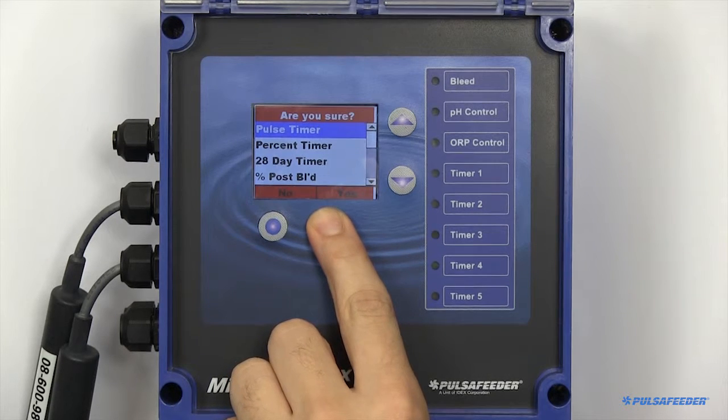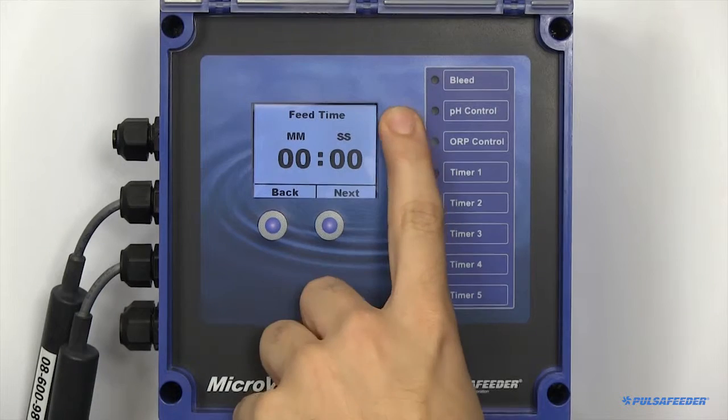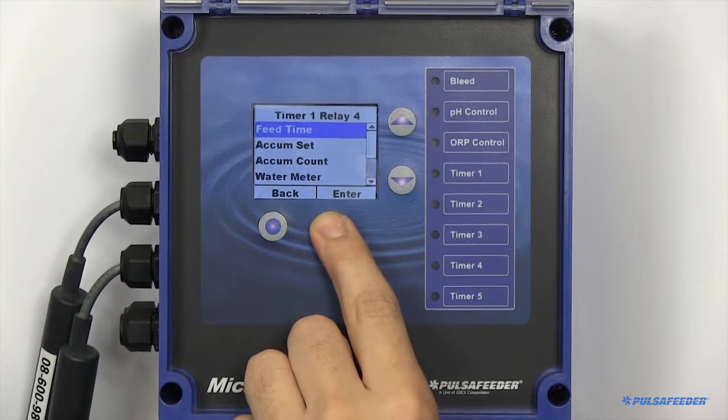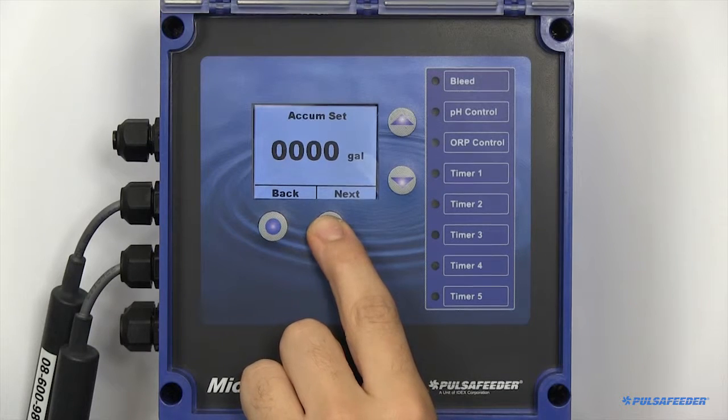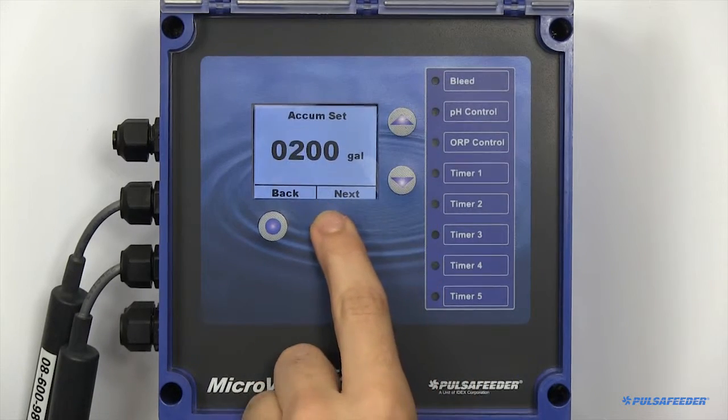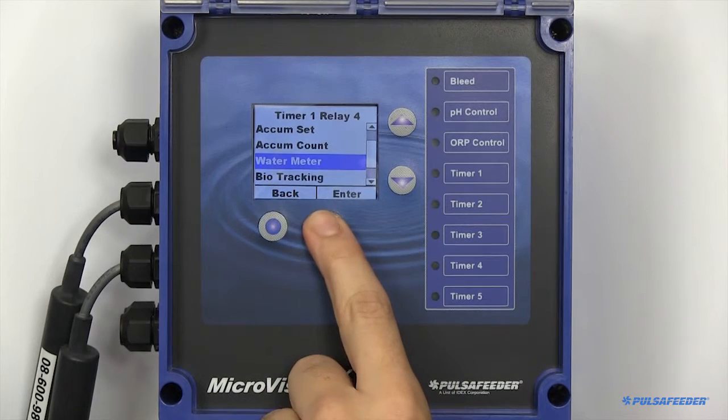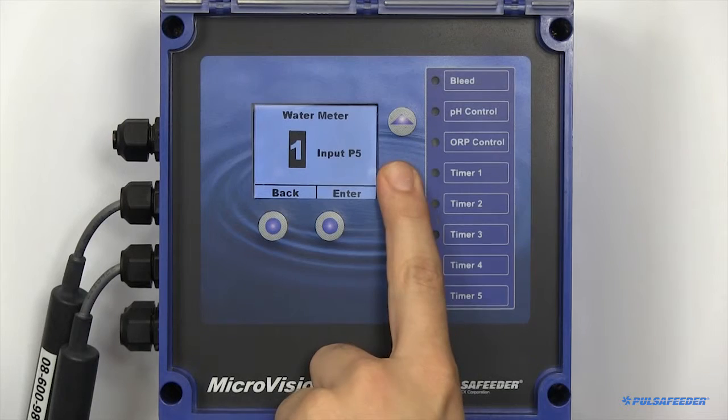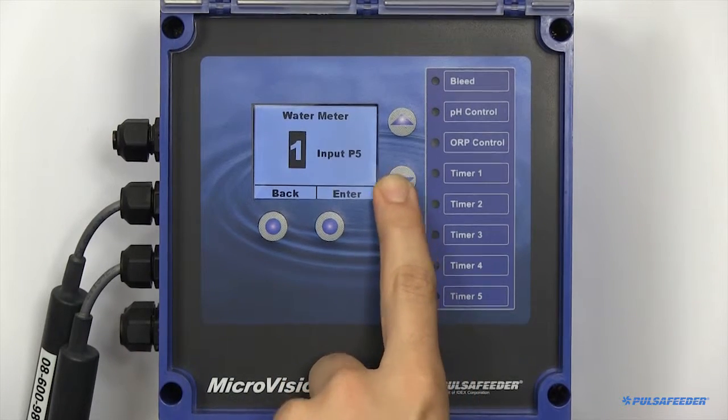To set up a pulse timer, you need to configure the feed time, or the desired amount of time you would like the pump to turn on when your accumulator set point has been reached. Set up your accumulator set point. If you have more than one water meter in your unit, you will need to point this pulse timer to the specific water meter you would like to look at.